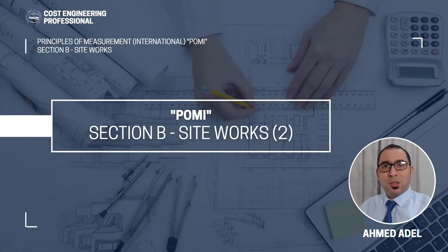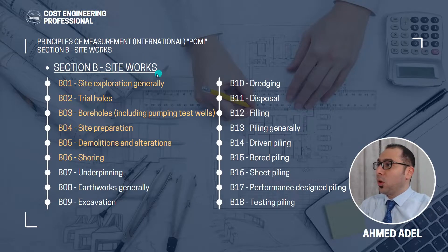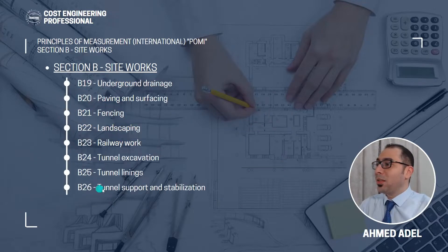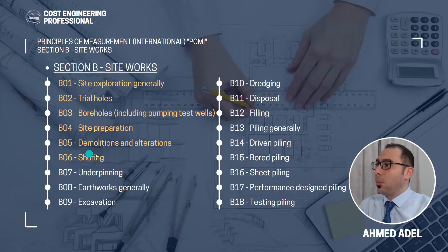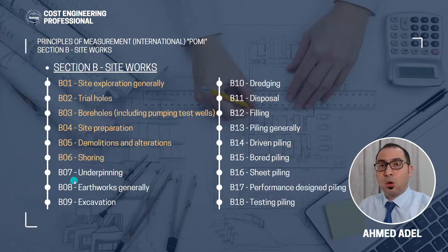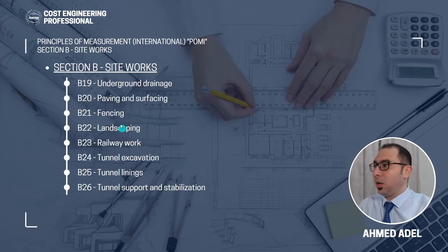All right guys, welcome back. Regarding the SiteWorks, Section B in accordance with POMI, Section B which is SiteWorks consists of 26 subsections. In our previous video, we talked up to Section 6. So we are starting from subsection number 7 here, which is underpinning.